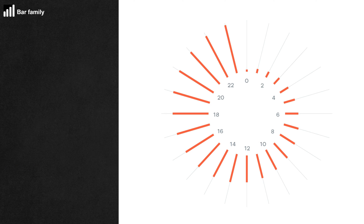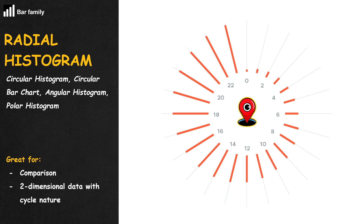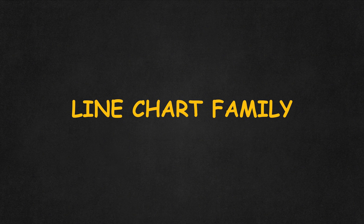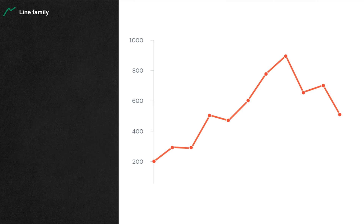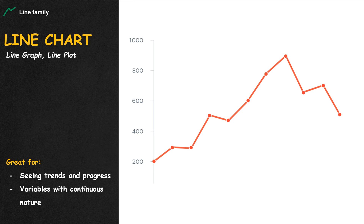When a histogram is placed on a circle and all bars or columns start from a center point instead of the axes, we have the radial histogram. That's it for the bar and column family. When a dataset has a continuity characteristic — for example, a value over time — a line may be used instead of multiple bars or columns. We have the line chart, and here comes its whole new family of variants.